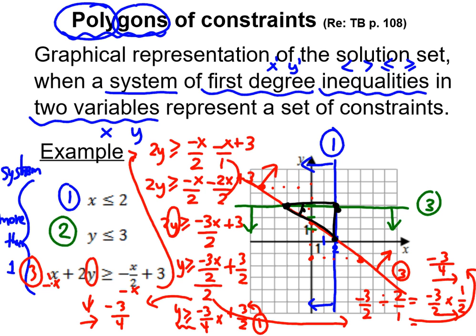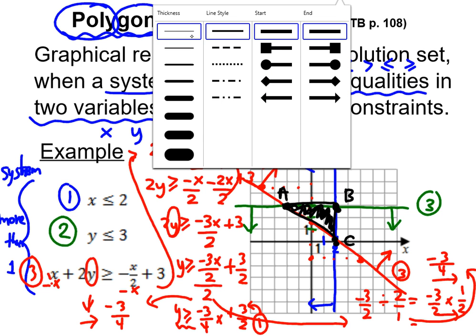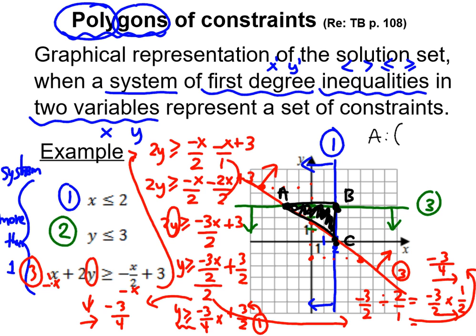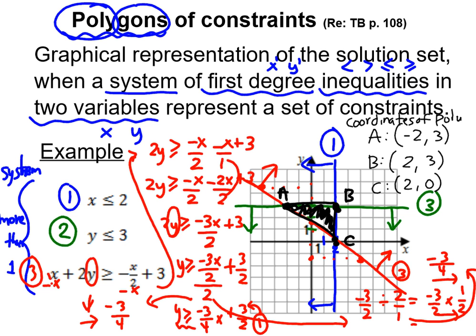You will find a shape forming here, and this is going to be our polygon of constraints. This polygon has three vertices: A, B, and C. You're going to have to find the coordinates of those vertices. In this case it's simple because the coordinates land exactly on the grid dots: A is (−2, 3), B is (2, 3), and C is (2, 0). These are the coordinates of the polygon.